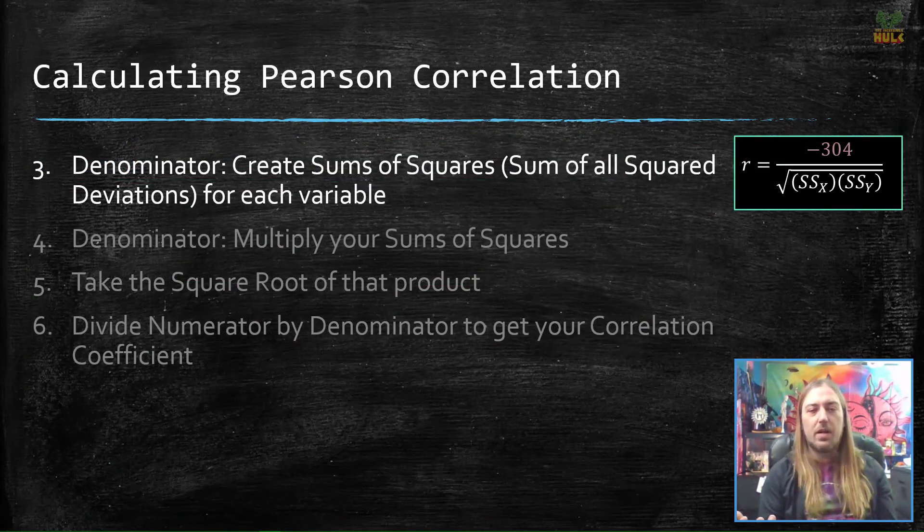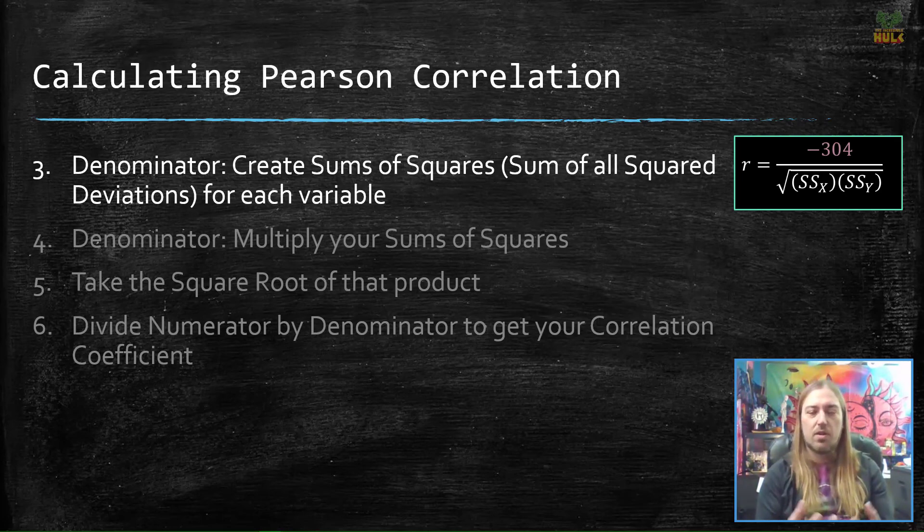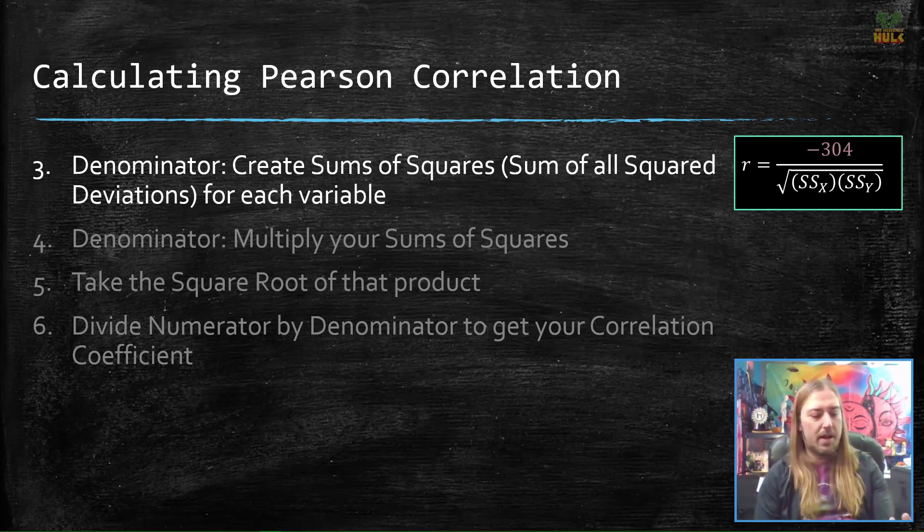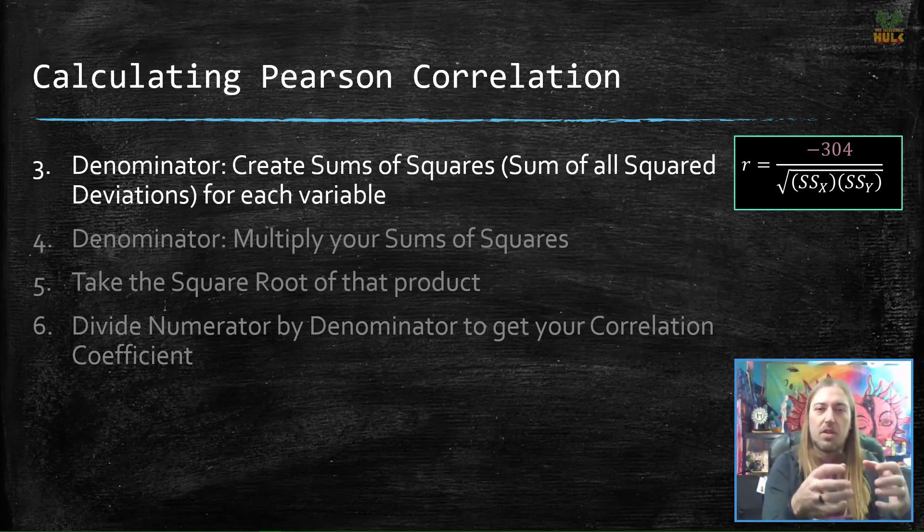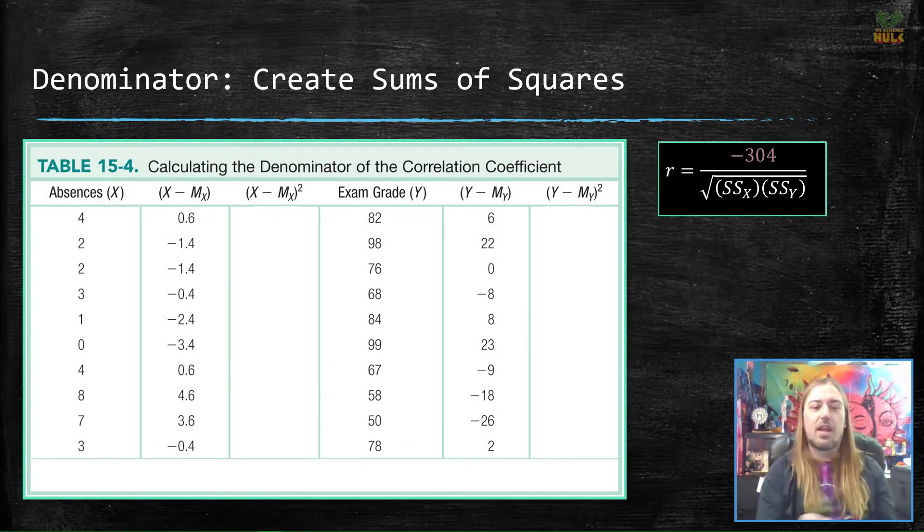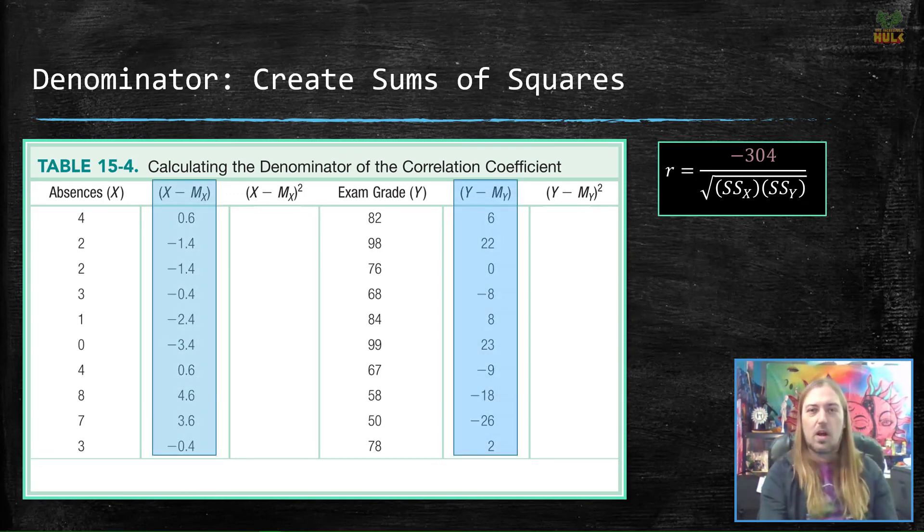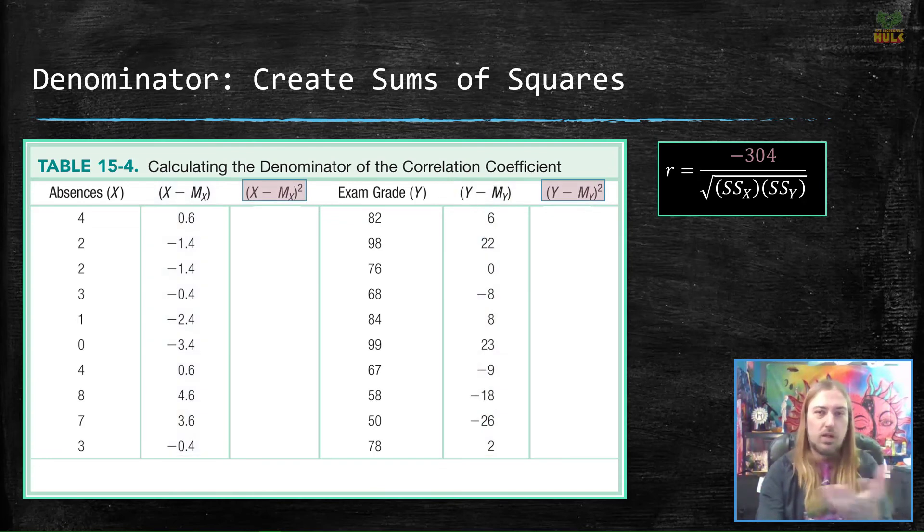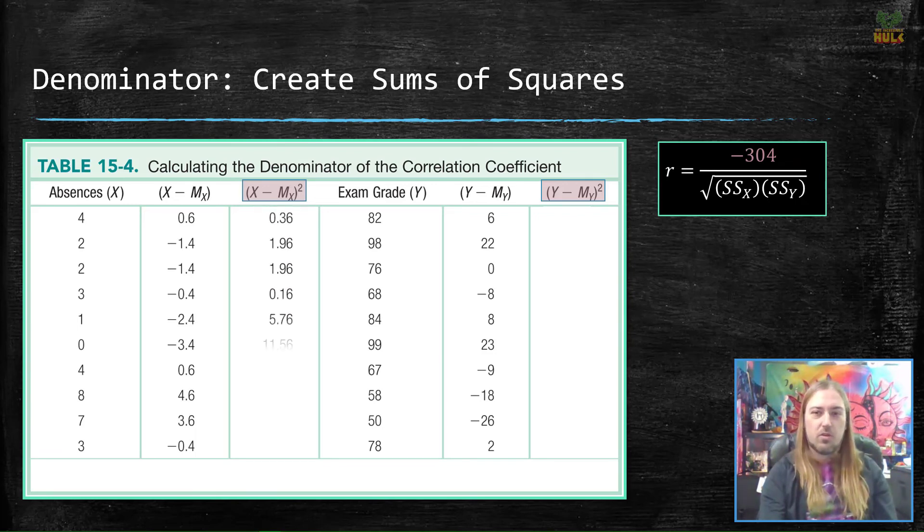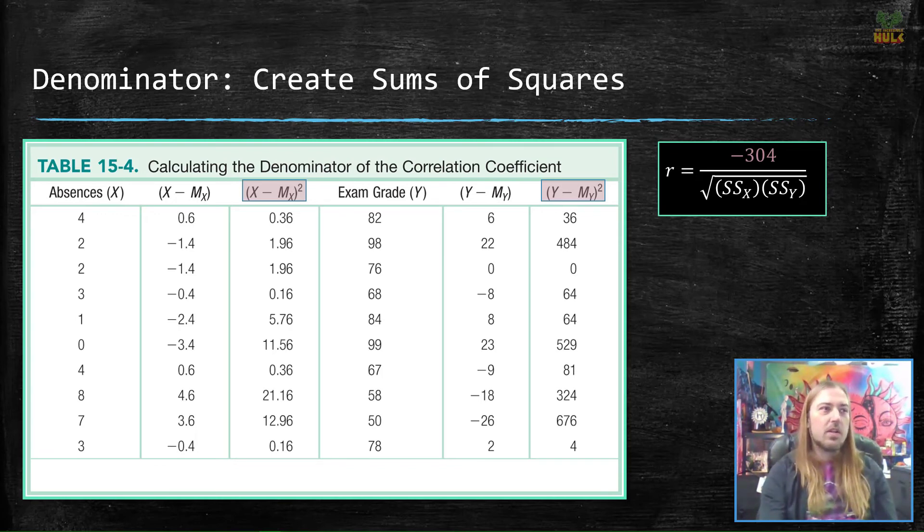So the denominator. Now we need to create those sums of squares, SSx and SSy, so a sum of squares for each of those variables. Well, that's pretty easy. We were actually already almost there. Remember, we did x minus the mean of x just on the last slide. That means all we have to do to get the sum of squares is to square all of those values. Remember, the sum of squares are the square deviations. We've got the deviations. Let's square them. So that x minus the mean of x, we just square all of that and we square all the y minus the mean of y. We're really just adding two more columns, columns that you're used to from standard deviation. Now what do we need to do? It says we need to find the sums of squares and then multiply them.